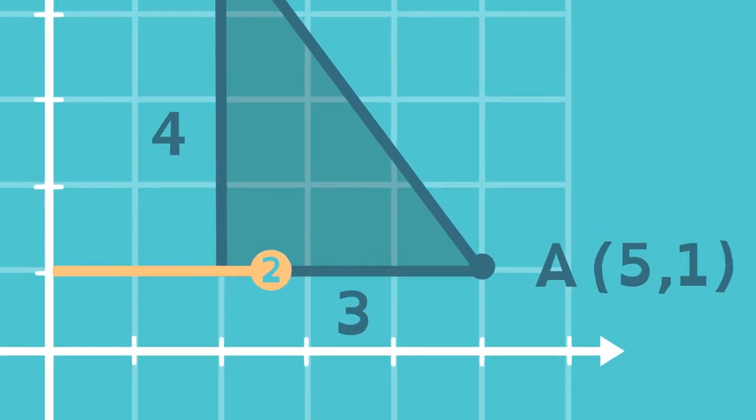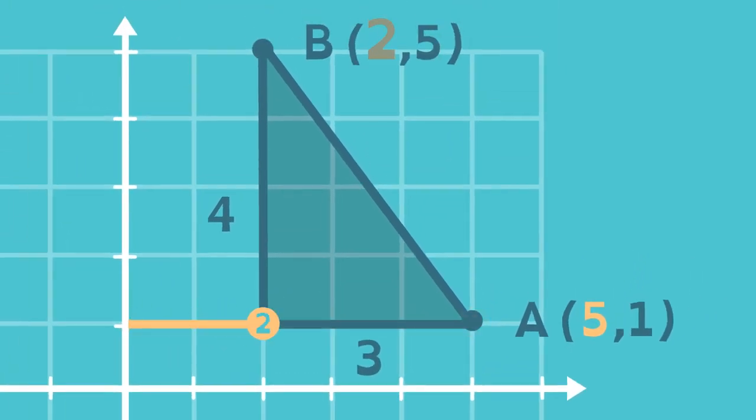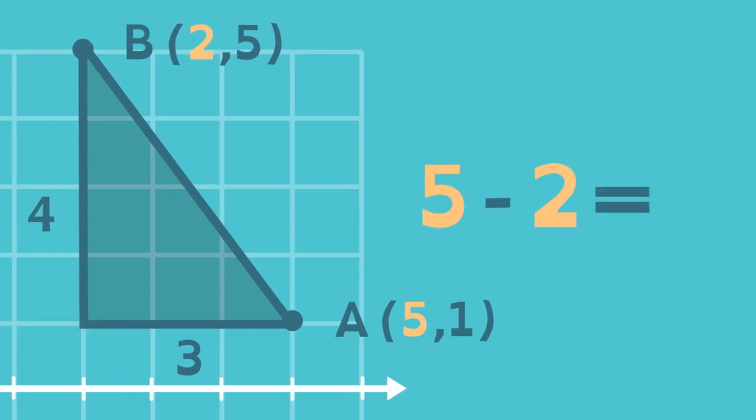For the horizontal leg, take the x distance of a and subtract the x distance of b. This is equivalent to subtracting the x coordinates of a and b.